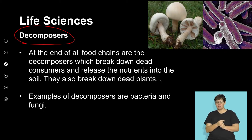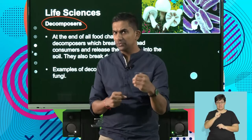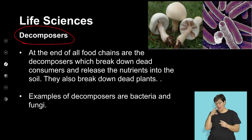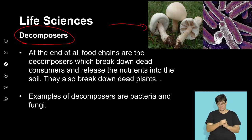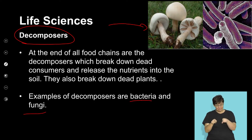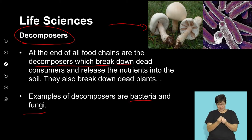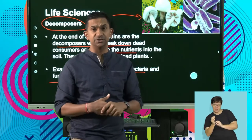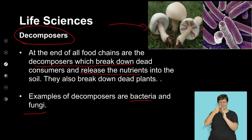Decomposers are an important part of energy flowing through an ecosystem. Examples include fungi and bacteria, which play an important role in breaking down waste products and returning nutrients back into the food chain, completing the nutrient cycle in any ecosystem.